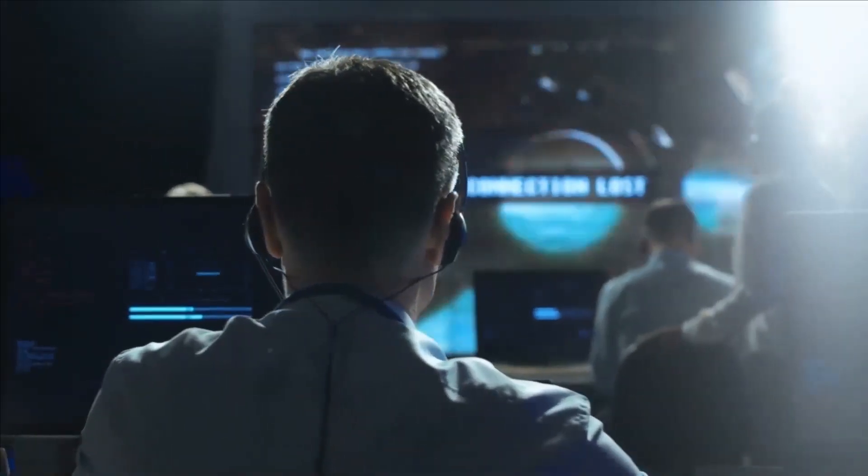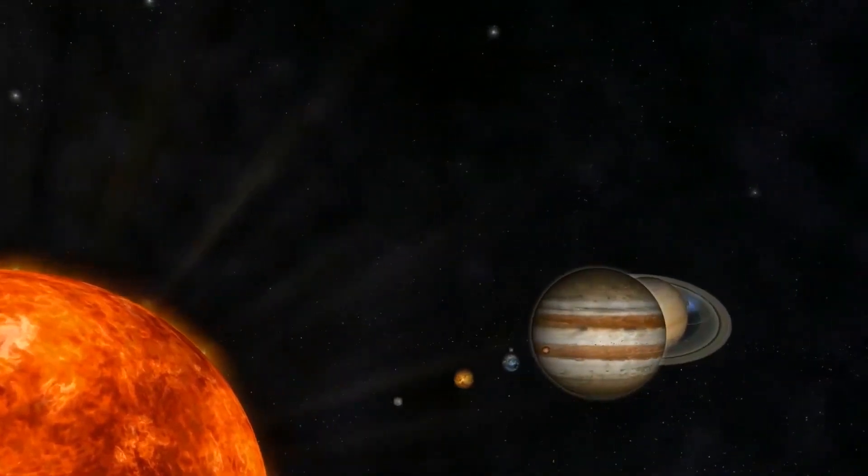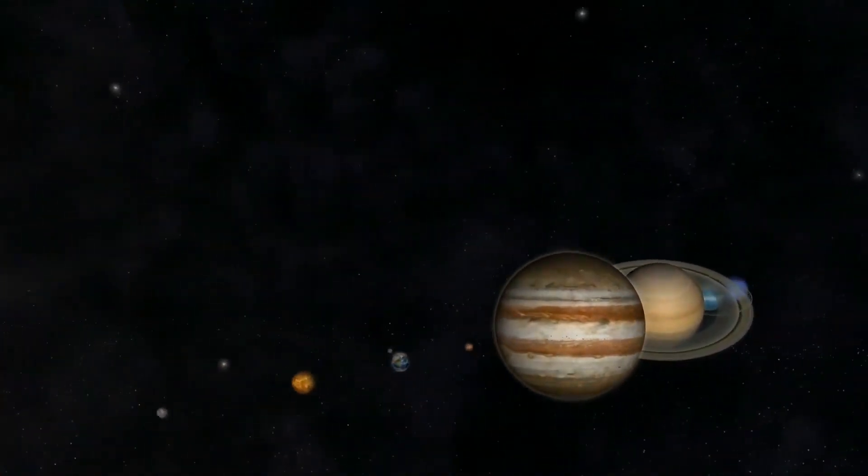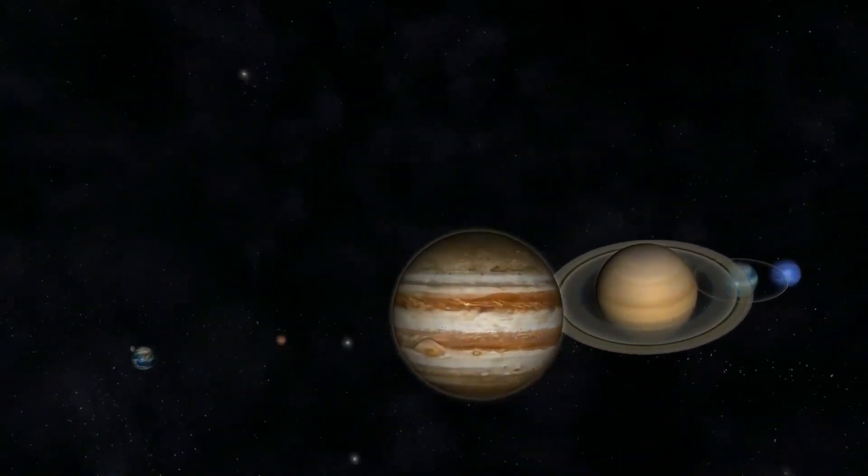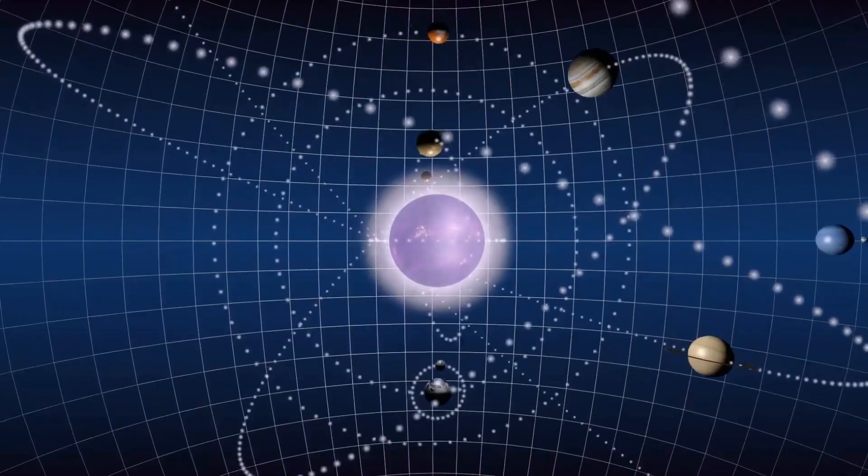New research suggests the existence of a new planet in our solar system. In recent years, our perspective of the solar system has drastically changed. We were raised with a clear understanding of what constituted the solar system. We were positive that the solar system had nine planets.